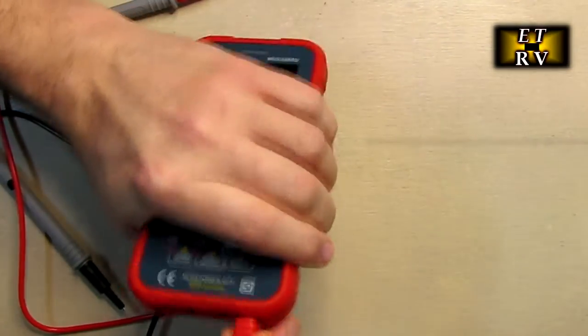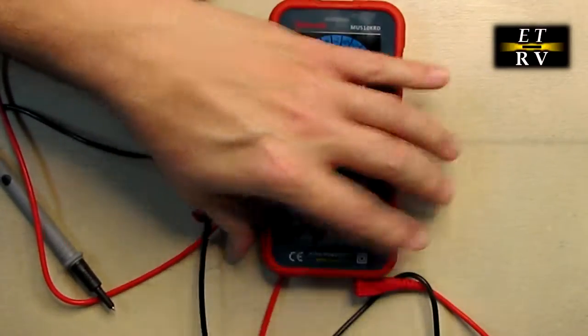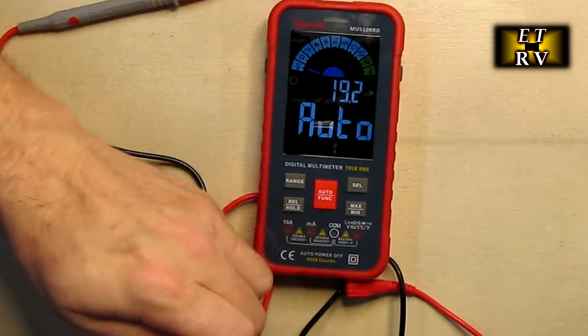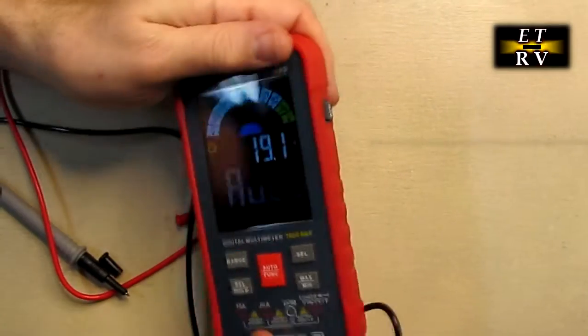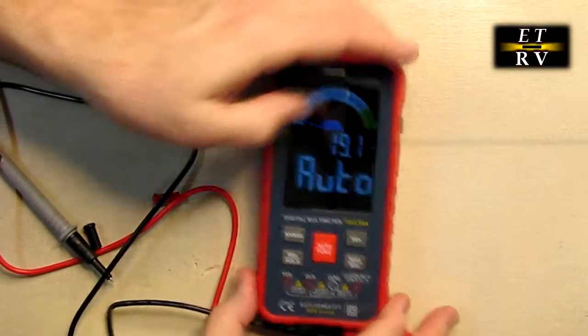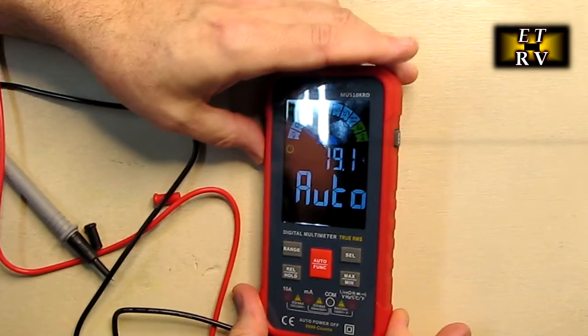We're going to take the positive and put it right there. I'm going to take the negative. Make sure you remove that little plastic piece right there. And now we're connected up to what they recommend you connect it to.